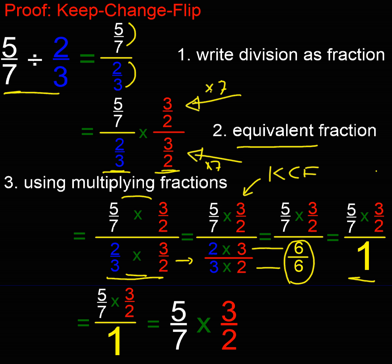So now I've got a number here, the KECF bit: keep, change, flip, and divided by 1. Well, any number divided by 1 is just itself, isn't it? 10 divided by 1 is 1. 60 divided by 1 is 60.